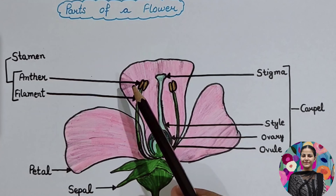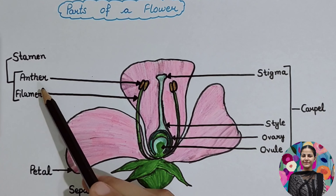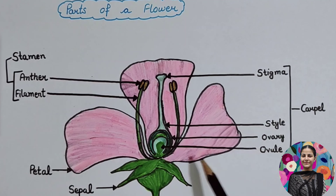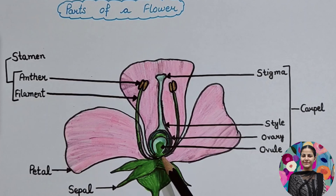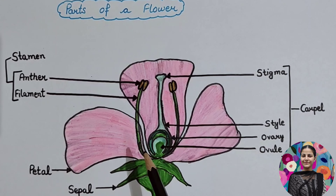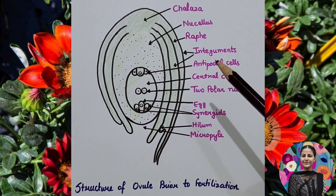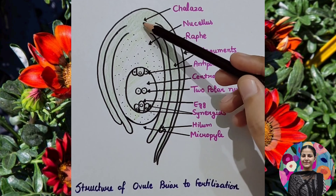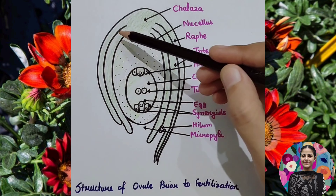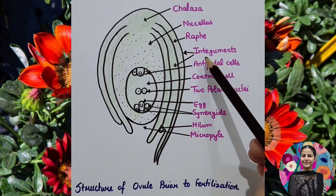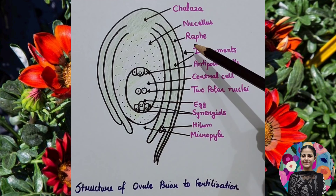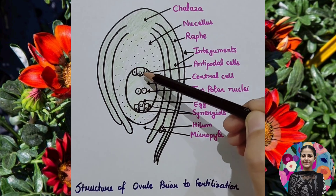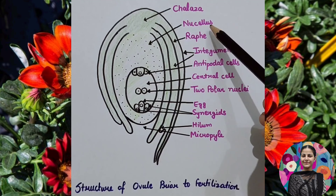When fertilization occurs, a zygote is formed. Looking at the ovule structure, it is covered by integuments. Inside is the embryo sac. Around the embryo sac there are nurse cells. Above the embryo sac is the egg apparatus, which has two synergid cells on either side of the egg cell.